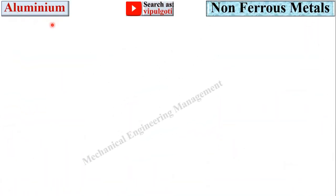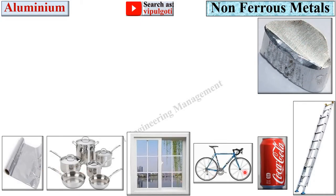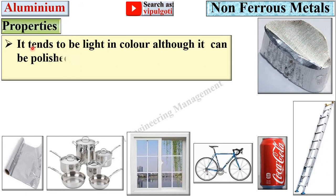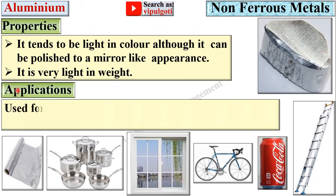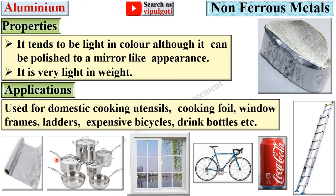First, aluminium. Here you can see aluminium and its different applications. Properties: it tends to be light in colour, although it can be polished to a mirror-like appearance, and it is very light in weight. Applications: used for domestic cooking utensils, cooking foil, window frames, leather, expensive vehicles, and drink bottles.